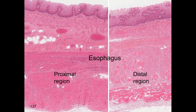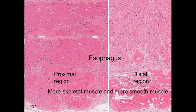In the esophagus, stratified squamous epithelium is present in both the proximal and distal regions. One notable feature is that the type of muscle changes from proximal to distal — starting mostly with skeletal muscle, which allows a reflex to cough things up and initiate swallowing. As you approach the stomach, you get more smooth muscle.